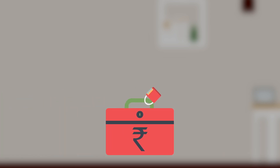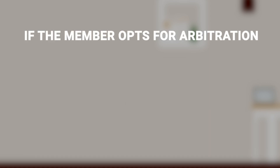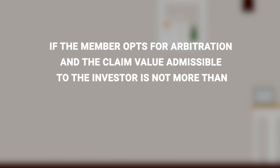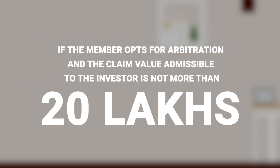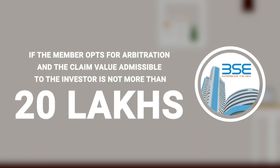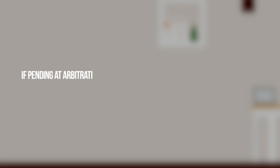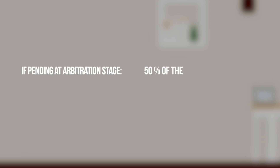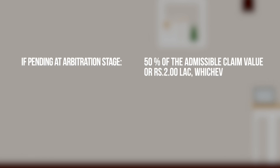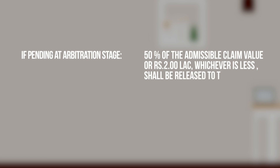If the trading member doesn't appeal, the exchange releases the blocked amount to the investor. If the member opts for arbitration and the admissible claim value is not more than 20 lakh rupees, then at the arbitration stage, 50% of the admissible claim value or 2 lakh rupees, whichever is less, shall be released to the investor.